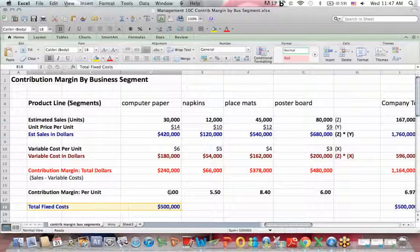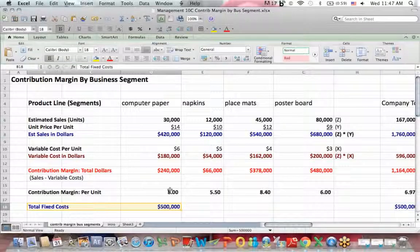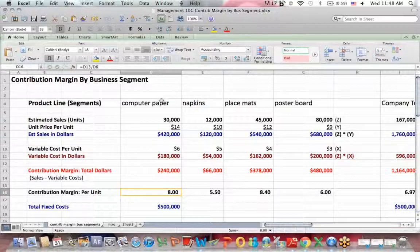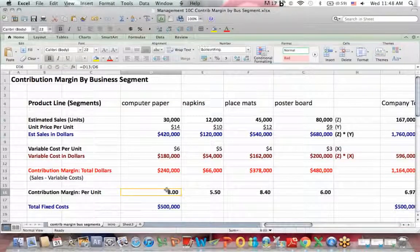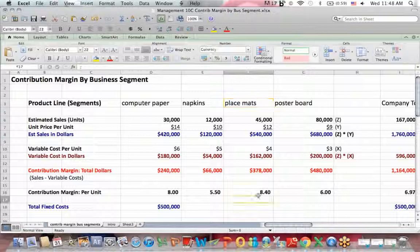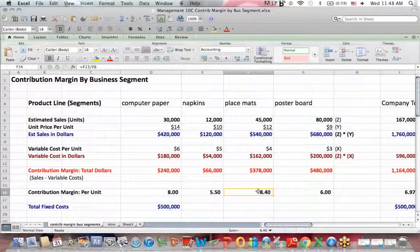So, what management is saying is, let's ignore the allocation of fixed costs and just see how profitable everything is, just looking at contribution margin per unit. And we can see that the computer paper has the highest contribution, actually, sorry, placemats have the highest contribution margin per unit, $8.40.